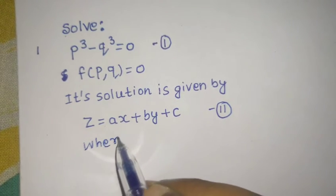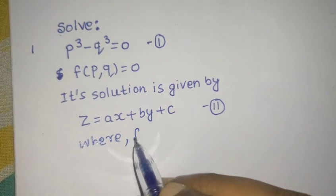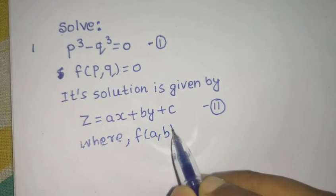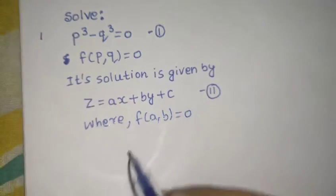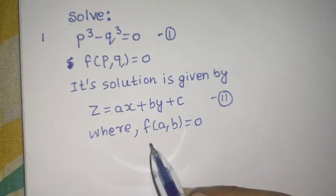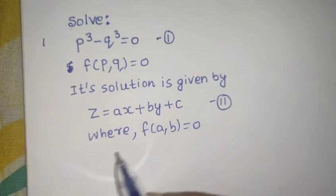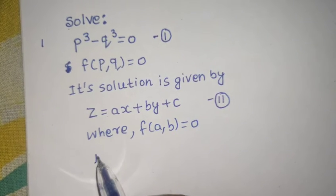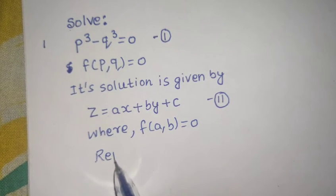One more thing we have where F(A, B) = 0. How to get this function of A comma B? Just want to do one thing.